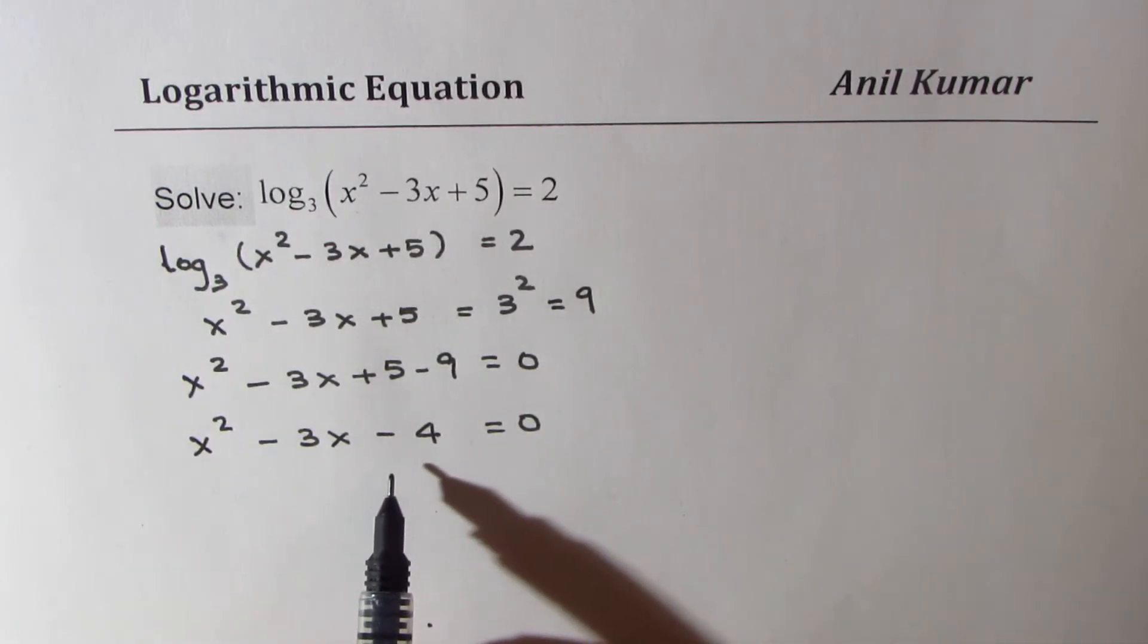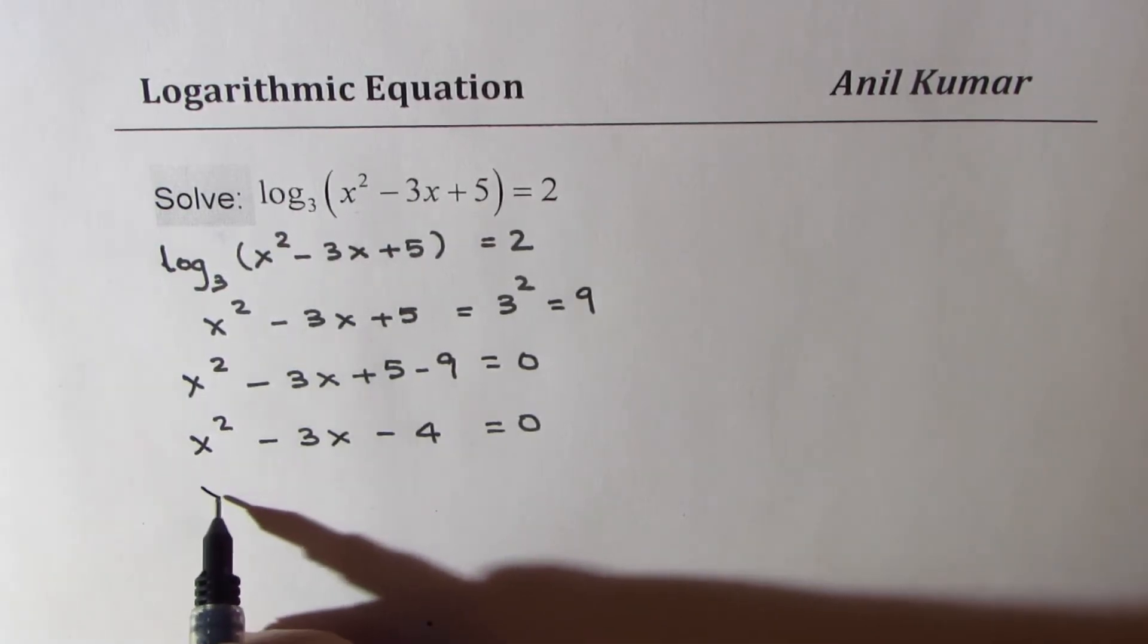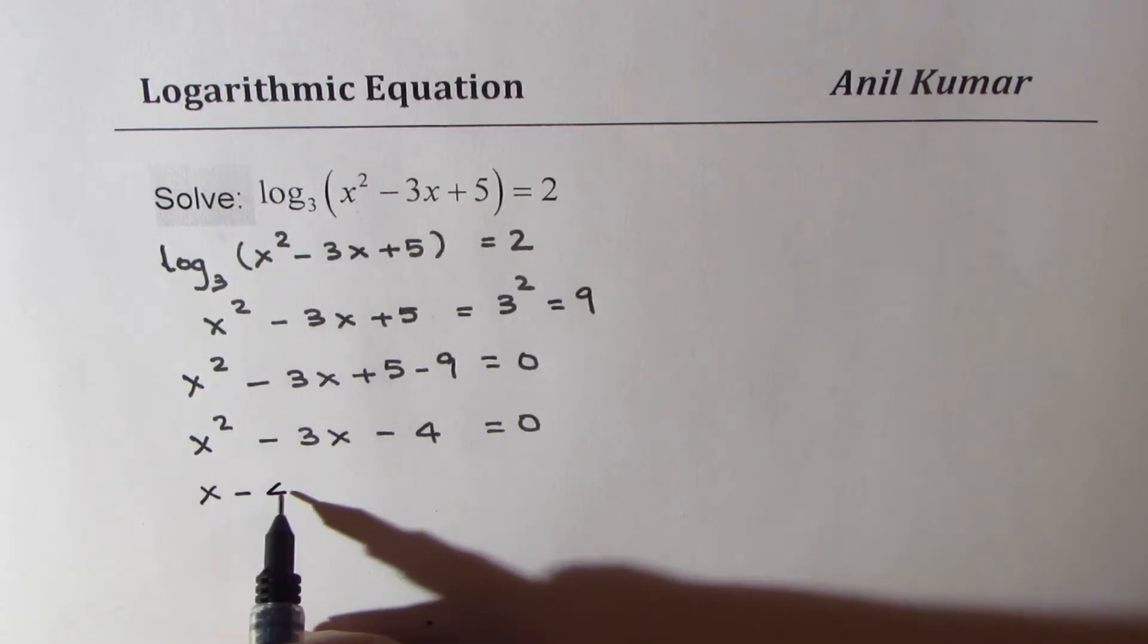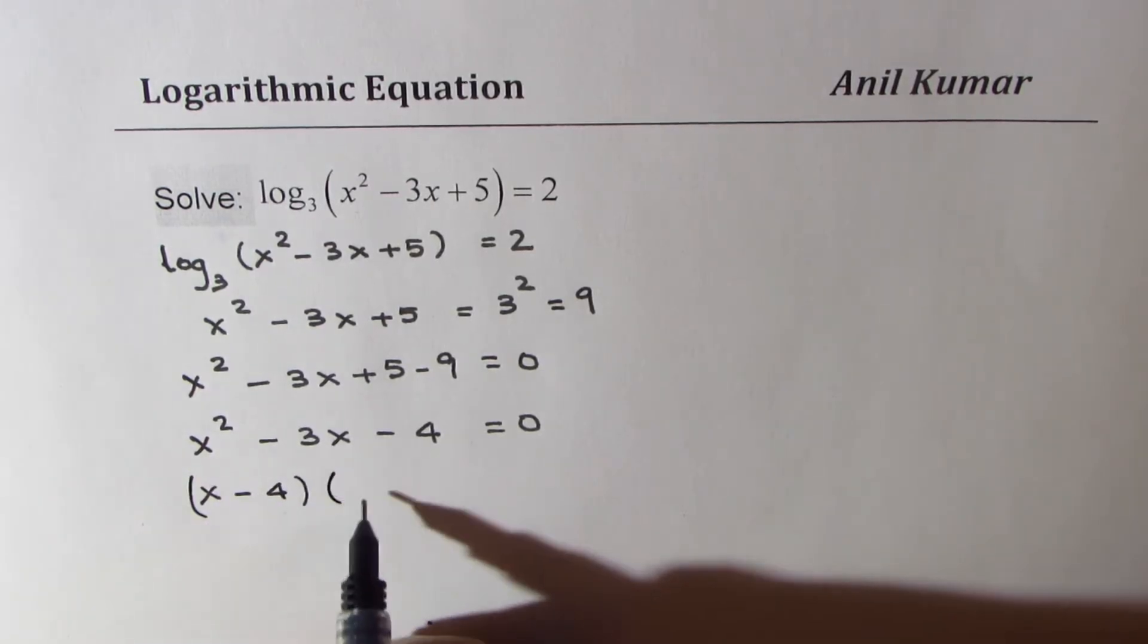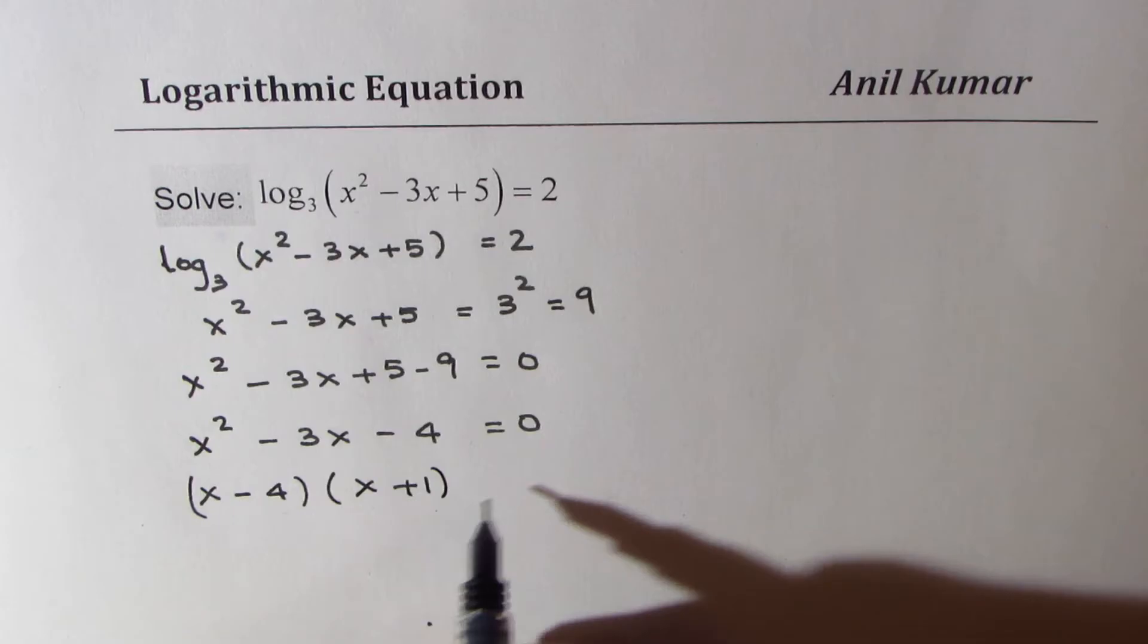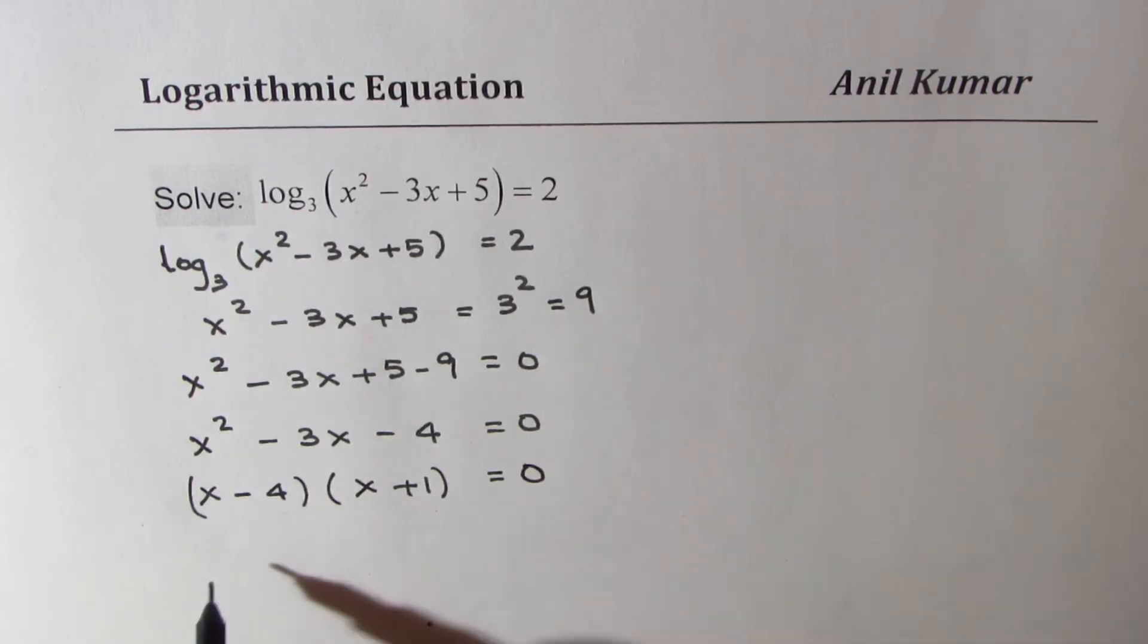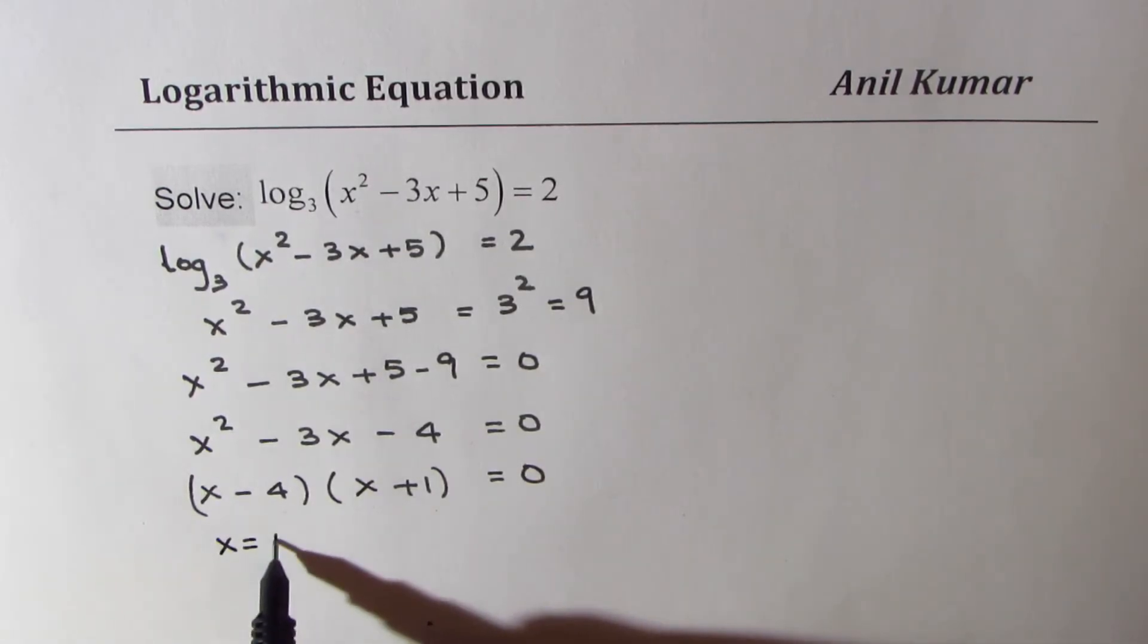Now we can factor this. We are looking for a product of -4, sum of -3, so it could be (x - 4)(x + 1) = 0. That gives us two solutions: x = 4 and x = -1.